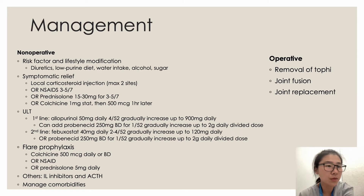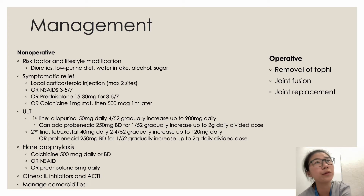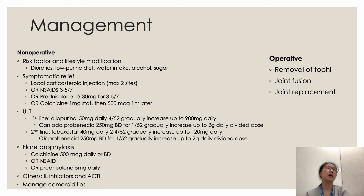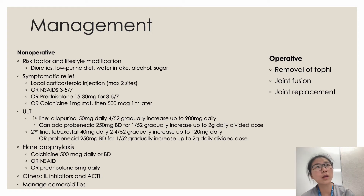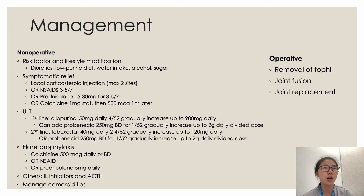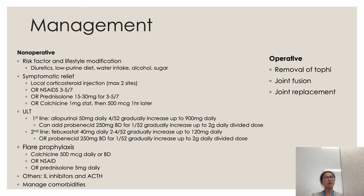Management of gout is mostly non-operative. The goal in the acute setting is symptom relief; in the intercritical period, the goal is prophylaxis and long-term disease modification. Acute treatment includes NSAIDs, prednisolone, colchicine, or local corticosteroid injection. In the intercritical period, urate-lowering therapy (ULT) is considered, with allopurinol as first line and febuxostat as second line. ULT should be started after the acute phase. Flare prophylaxis with colchicine, prednisolone, or NSAIDs can be considered in specific cases. Interleukin inhibitors and ACTH are additional medications requiring specialist initiation.